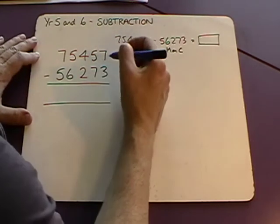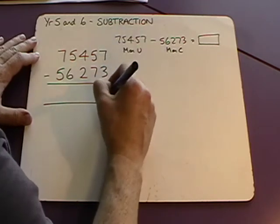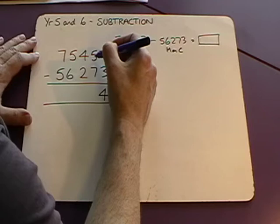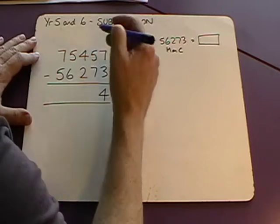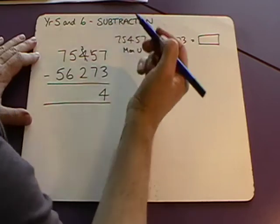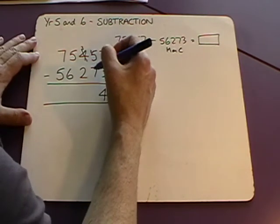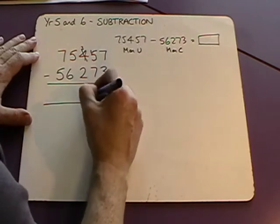So start with the ones. Seven ones take away three ones is four ones. Tens column. Five subtracts seven. We can't do that. We need to borrow a hundred. Leaves it with three hundred and the hundred goes there to make fifteen tens. Fifteen tens take away seven tens is eight tens.